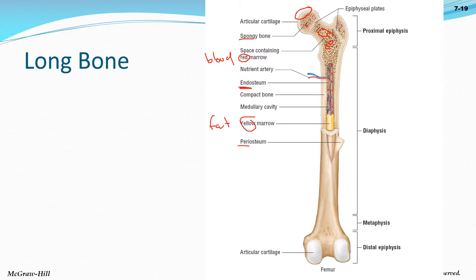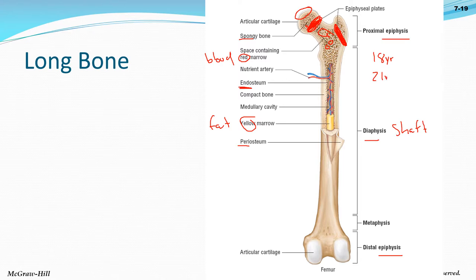Red bone marrow makes blood; yellow bone marrow is fat storage. The ends of a long bone are called the epiphysis; the shaft is called the diaphysis. Your bones grow at the epiphyseal plates — the growth plates — extending in both directions. When growth plates solidify as bone and are no longer cartilage, you stop growing. For females this is around age 18; for males around age 21.